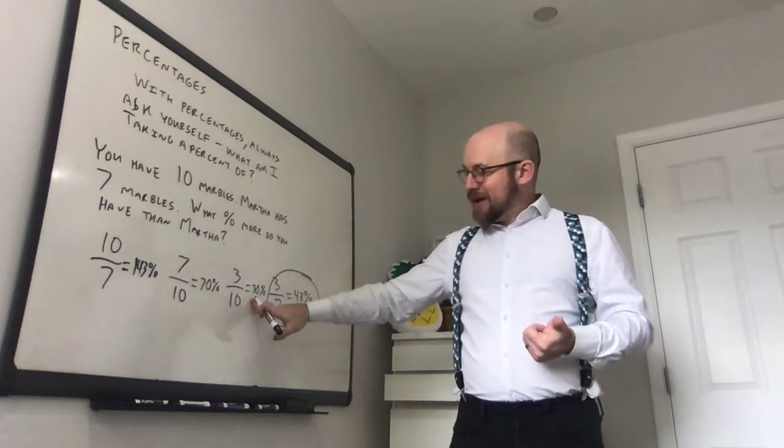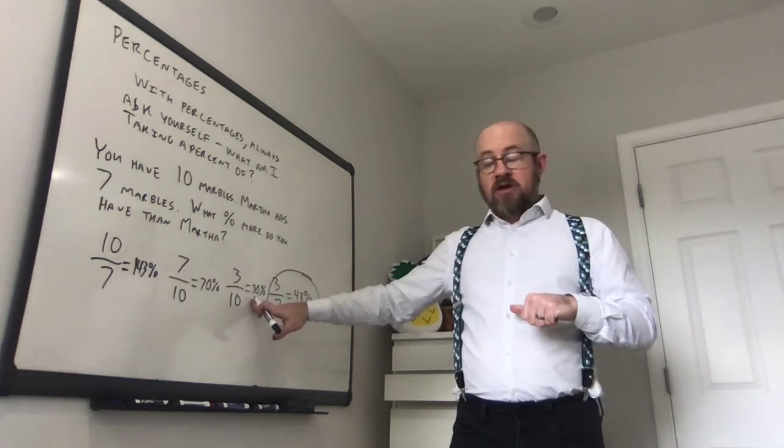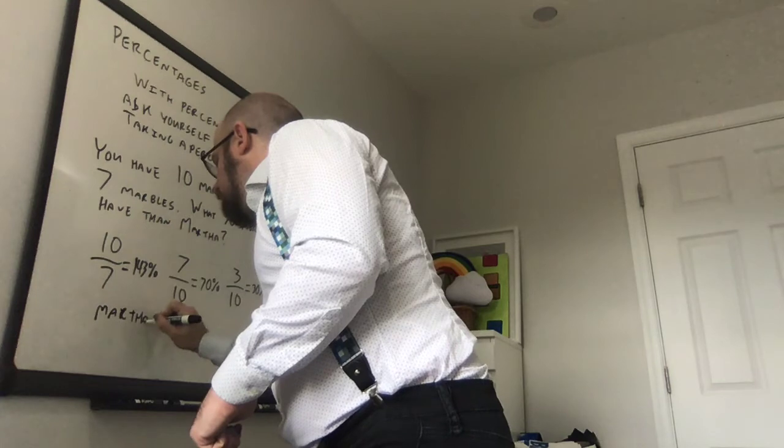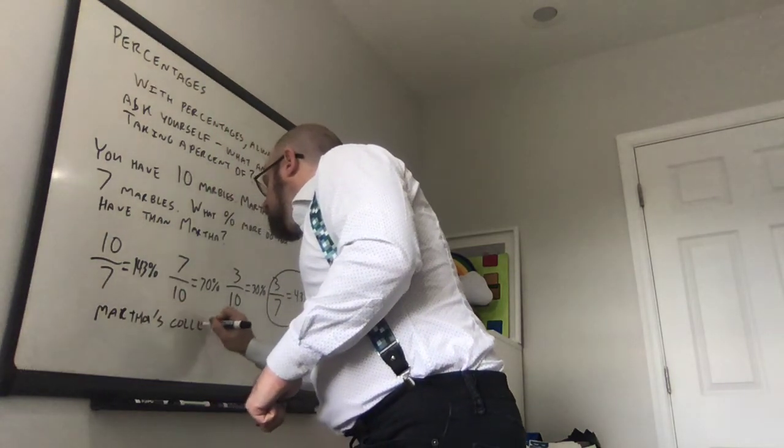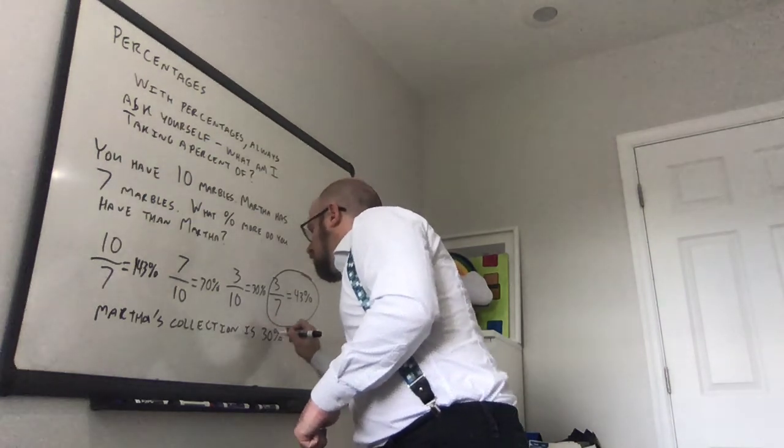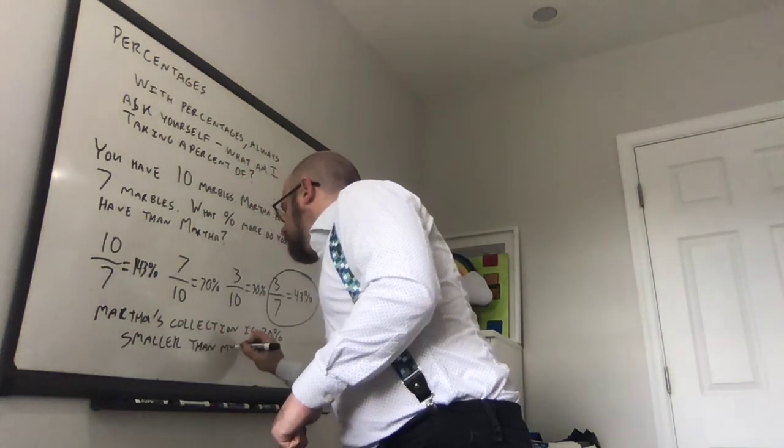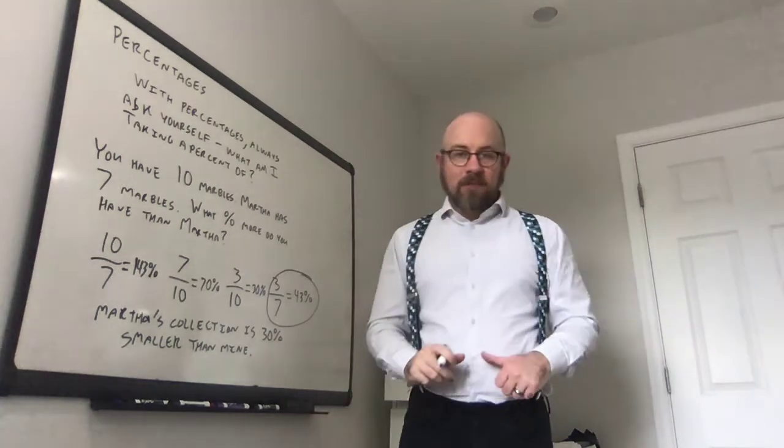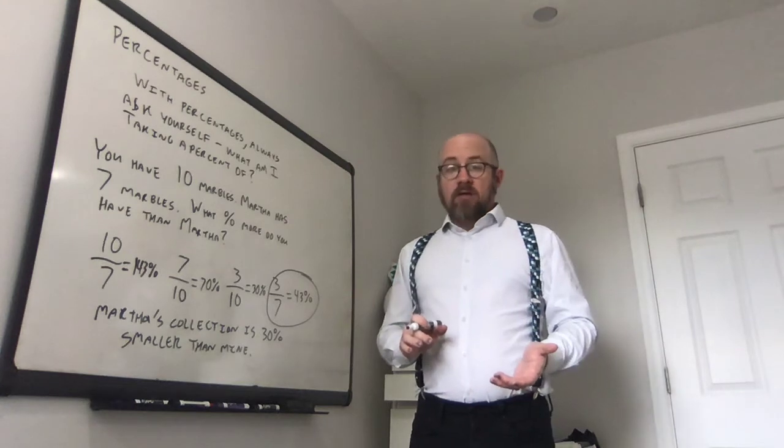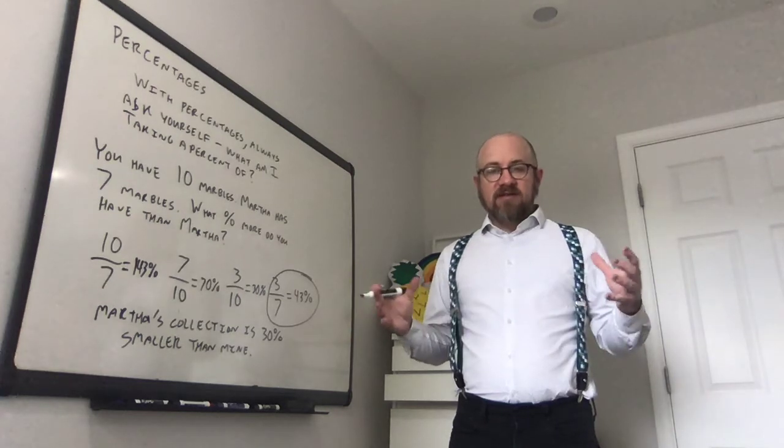What does this number mean? 3 out of 10? Well, this is if you were comparing Martha's collection to yours. So you would say Martha's collection is 30% smaller than mine. Martha's collection is 30% smaller than mine. Martha has 30% fewer marbles than I do. Something like that. Those are the kinds of statements that you can make.